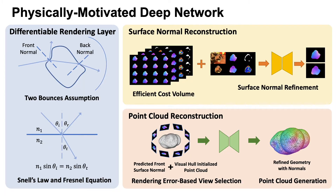Our physically-motivated deep network has three key components: a new 2-normal geometry representation, a cost-volume-based normal prediction network, and a rendering error-based point cloud reconstruction network.